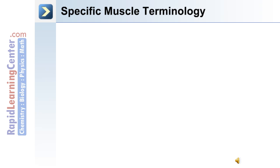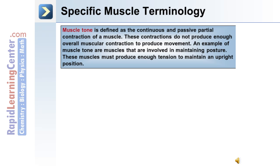The following are some specific muscle terminology. Muscle tone is defined as the continuous and passive partial contraction of a muscle. These contractions do not produce enough force to produce movement of the body. For example, the muscles involved in maintaining posture must produce enough tension to maintain the upright position.